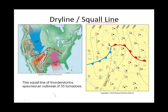We can identify a dry line by looking at dew point temperatures on each side. On the dry side, the dew point is around 21 to 36 degrees, meaning you need to cool the air significantly for condensation to occur. On the moist side, you only need to cool the air to 64 to 66 degrees. So that warm dry air can go ahead and lift the warm moist air right at the dry line boundary.